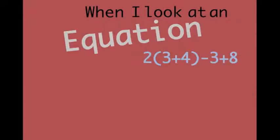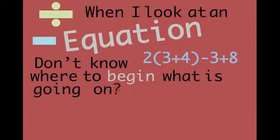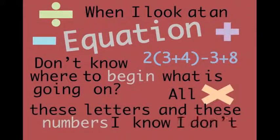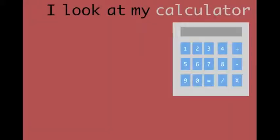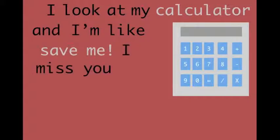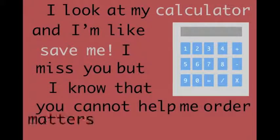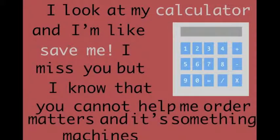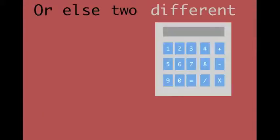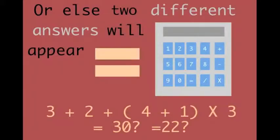When I look at an equation, don't know where to begin — what is going on, all these letters and these numbers, I know I don't even have a clue. Look at my calculator and I'm like, save me, I miss you. But I know the trick is not to help me — order matters. I don't slip the machines, can't do, or else two different answers will appear for you.